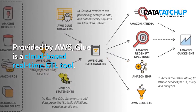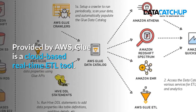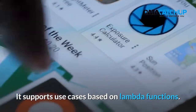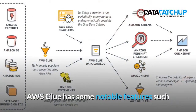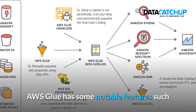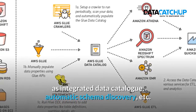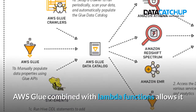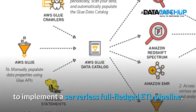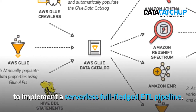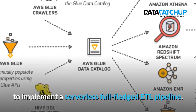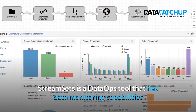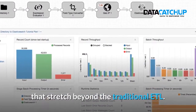Seven, AWS Glue. Provided by AWS, Glue is a cloud-based real-time ETL tool. It supports use cases based on Lambda functions. AWS Glue has notable features such as an integrated data catalog and automatic schema discovery. AWS Glue combined with Lambda functions allows it to implement a serverless, full-fledged ETL pipeline.